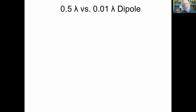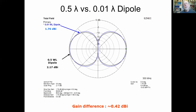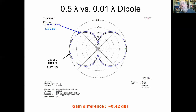Here's the answer to the question of half-wavelength versus 0.01 wavelength dipole when they are 100% efficient — something you can only do with modeling, since you can't make a 100% efficient 1/100th wavelength dipole in practice. The difference in effectiveness between a half-wavelength and a 0.01 wavelength dipole is a mere 0.42 dB — less than half a dB. The reason they differ at all is that the current distribution is slightly different on the short dipole, making its pattern just a little bit fatter.